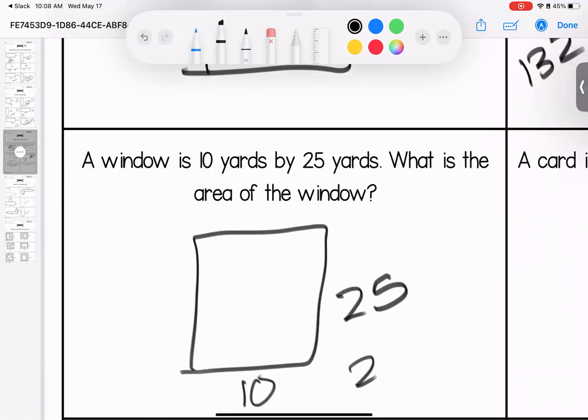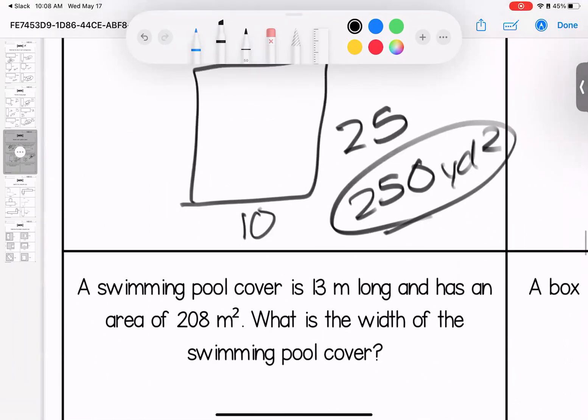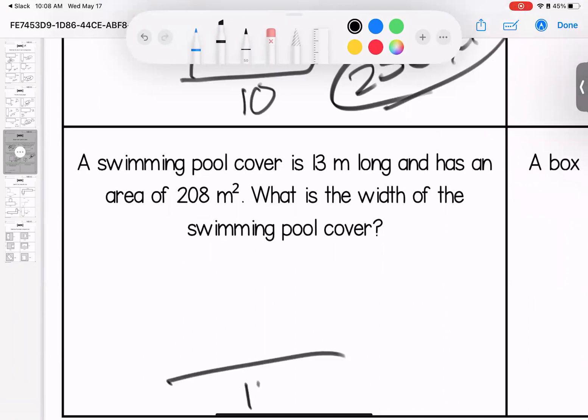A window is 10 by 25. What is the area? 250 yards squared, 25 times 10. A swimming pool cover is 13 meters long and has an area of 208 meters squared. So for this one we're doing 208 divided by 13.